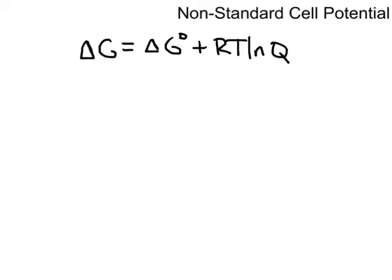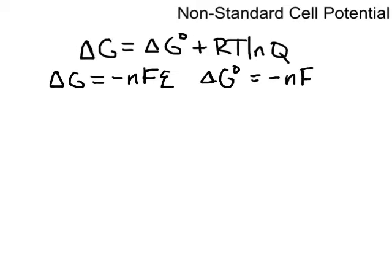All right, so we're going to start with this, and we're going to do a couple of fairly straightforward substitutions. We have recently learned that delta G can also be equal to negative nFE, or delta G zero, if you're at standard state conditions, is equal to negative nFE zero. So I'm going to take these two relationships and plug them in to my Gibbs free energy equation. So I'm going to have negative nFE is equal to negative nFE zero plus RT ln Q.